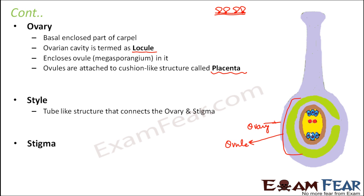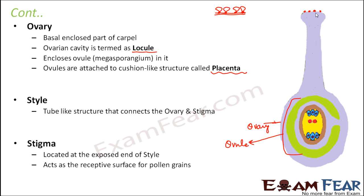The last part is the stigma, which is located at the exposed end of the style. It receives the pollen grains, so it acts as the receptive surface for pollen grains. The pollen grains are collected here, then pass through the style, and finally reach the ovule.